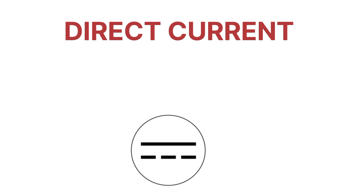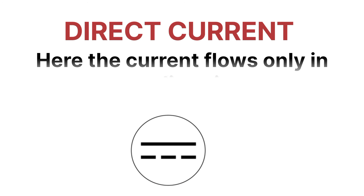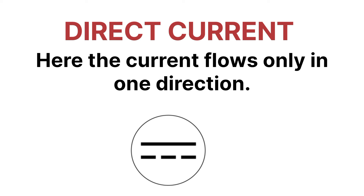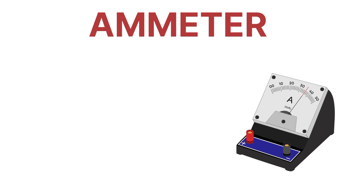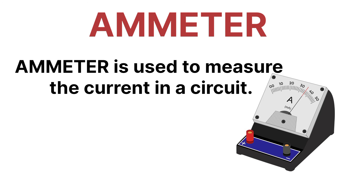Next is DC or direct current. Direct current is a one-directional flow of electric charge — the current flows only in one direction, which is why it is called direct current. This is the symbol for direct current.